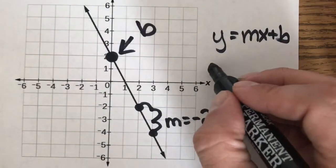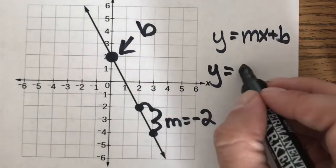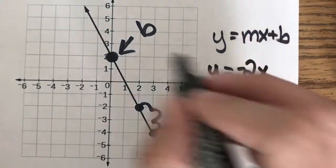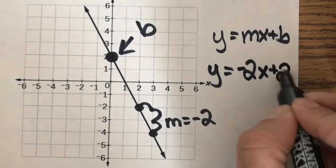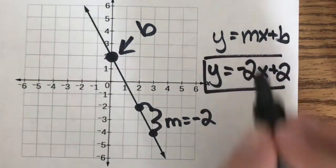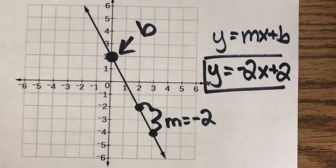Put it all together, y equals mx plus b. m is negative 2x plus b, which is positive 2. My equation is y equals negative 2x plus 2.